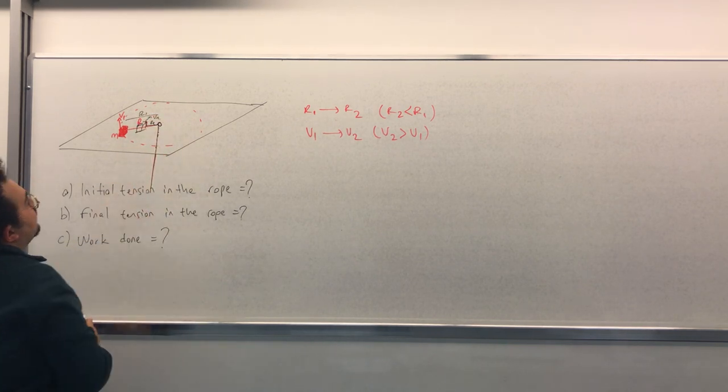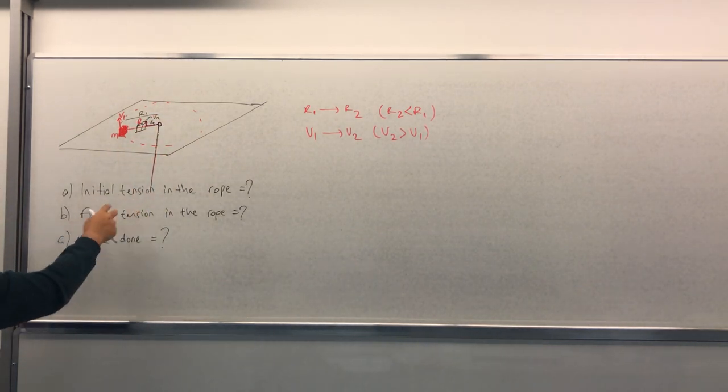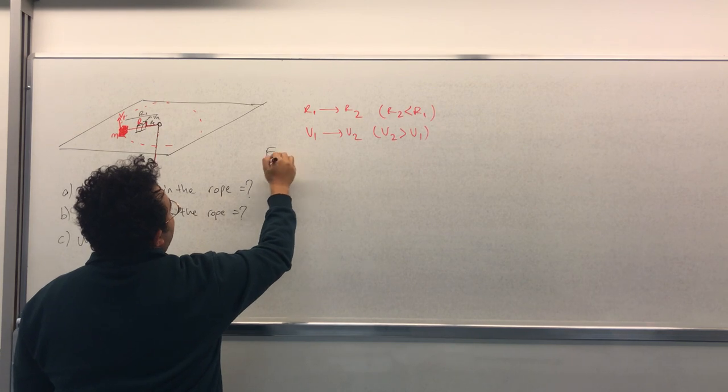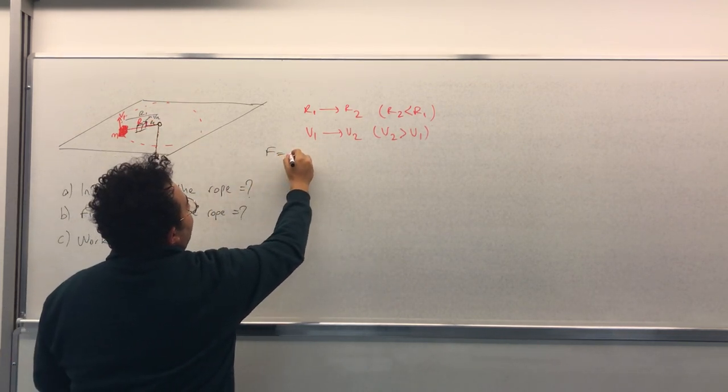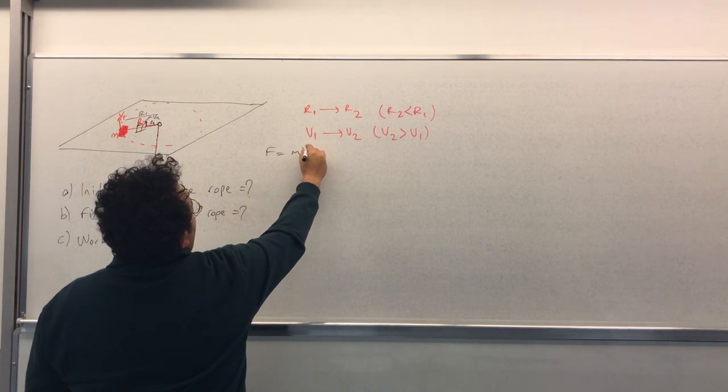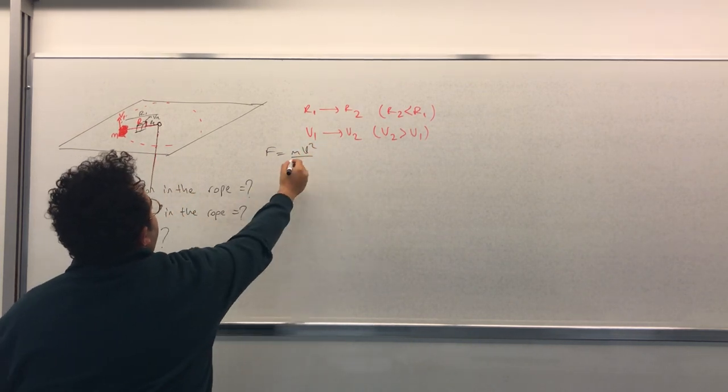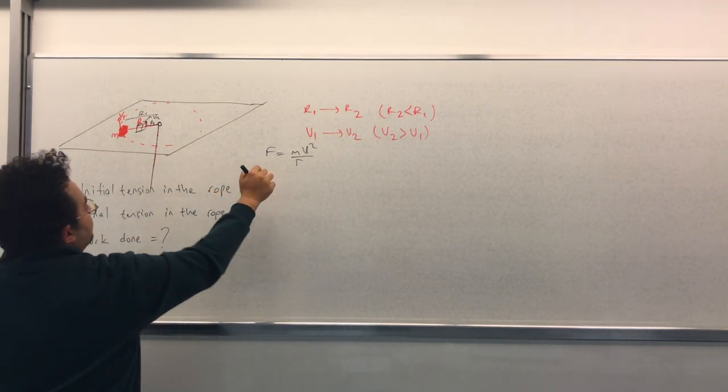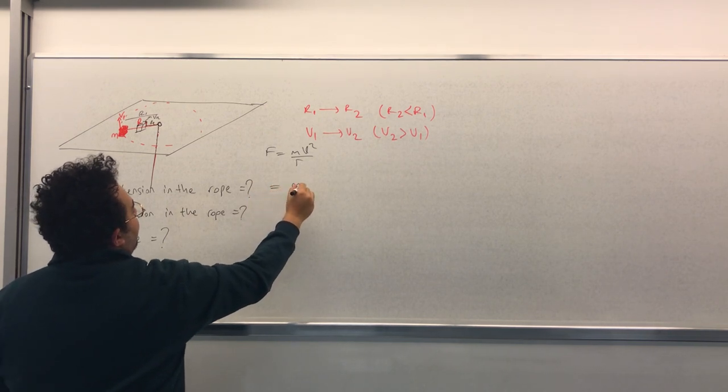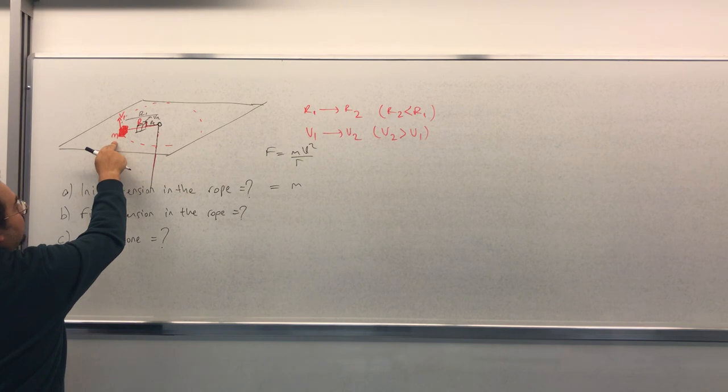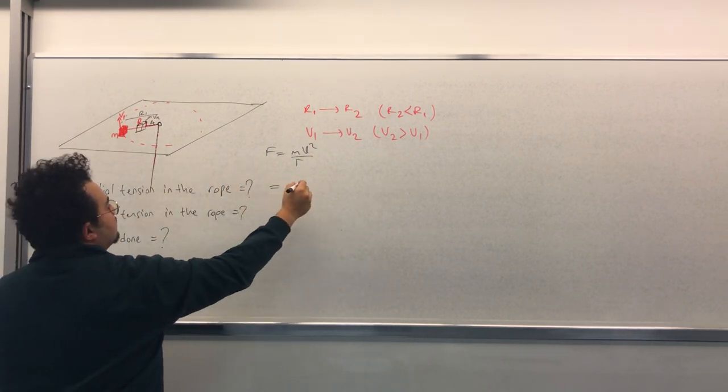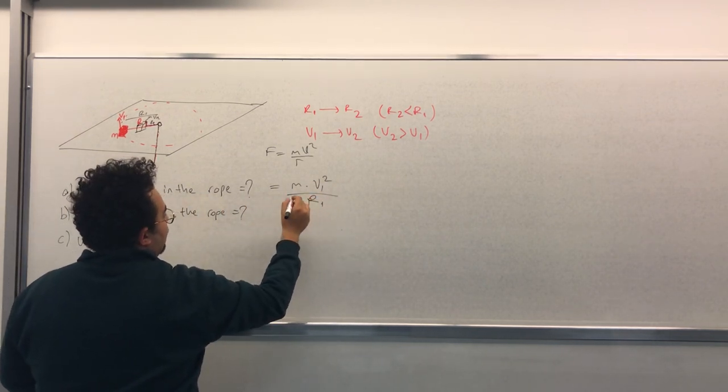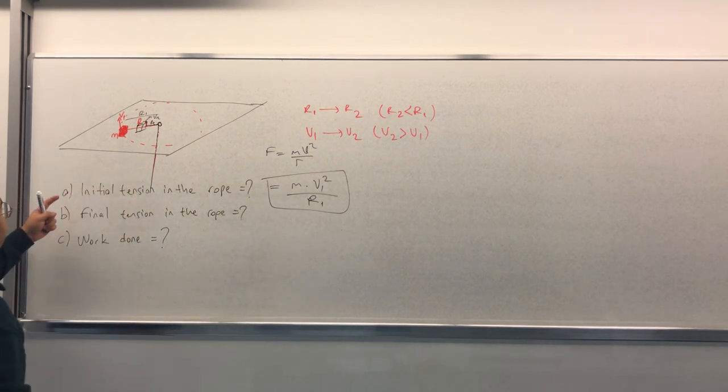So what's the initial tension in the rope? As you remember, the formula for the force because of the rotation is f equals m v squared over R. Now for the initial case, we know that the mass is small m times v1 squared divided by R1. This is the answer for part A.